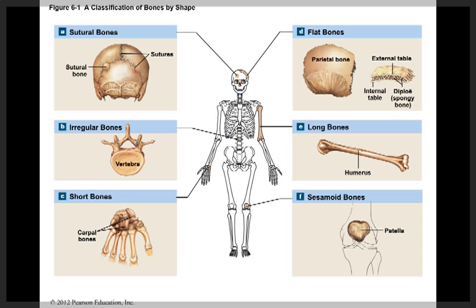The skeletal system includes the bones, cartilages, ligaments, and other connective tissue. Bones work together with muscles to maintain body position and to produce controlled movement. The skeletal system has five main functions.